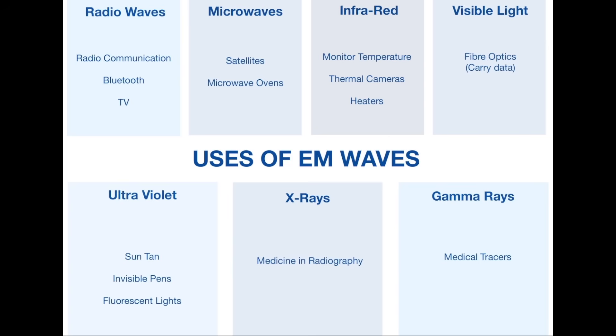Infrared is used to monitor temperature—things like thermal cameras and heaters. You've probably seen a thermal camera where all the different colors are red and blue depending on the heat around it. Visible light: fiber optics. These are basically wires that carry data. This is what's used in things like advanced Wi-Fi and big data cables that travel under the oceans and stuff like that. Ultraviolet: things like suntans, invisible pens. Sometimes you might have seen those pens where you write a hidden message and then use a light to see that message—that's ultraviolet. And also fluorescent lights.